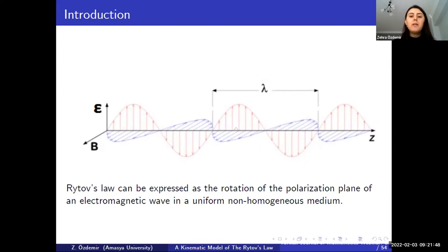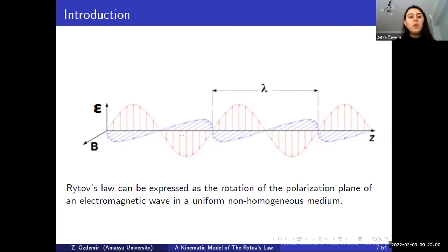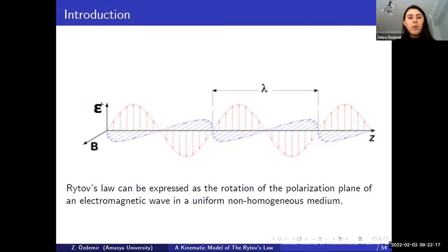The z-axis can be assumed to represent an optical fiber, and here we can see that the tangent vector of the optical fiber is perpendicular to the polarization plane. Thus, if we want to see a linearly polarized light wave along an optical fiber, the polarization plane makes a rotation motion. During this rotation motion, the tip points of the electric field trace a curve called the Rytov curve.